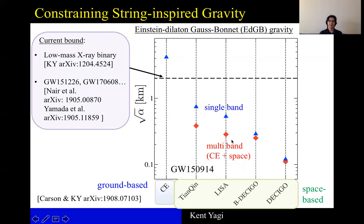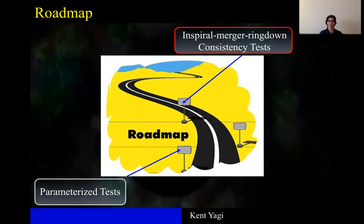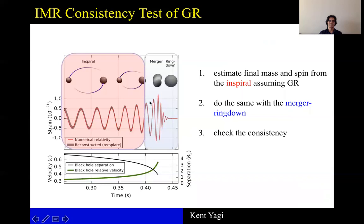Let me switch gear to the second model independent test called inspiral-merger-ringdown consistency test. The idea here is that you split the waveform into two portions inspiral and merger-ringdown portion.